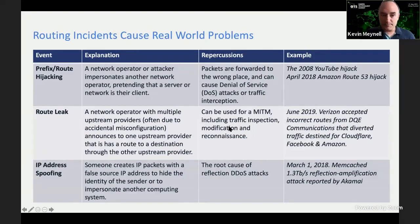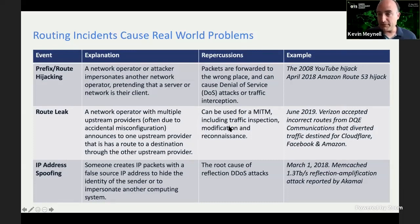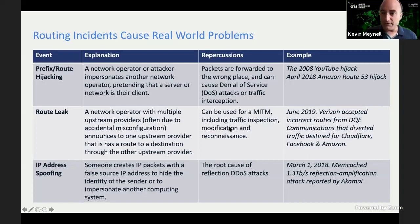There are three main problems. First is a route hijack, where a network operator or attacker impersonates another network operator — pretending their network is another network — by sending out routing announcements to that effect. This can cause packets to be forwarded to the wrong place. Sometimes this is done deliberately for censorship reasons, other times for malicious reasons, denial of service attacks, and a whole host of other reasons. There have been well-known examples in the past, but we can now see this happening pretty much every day.